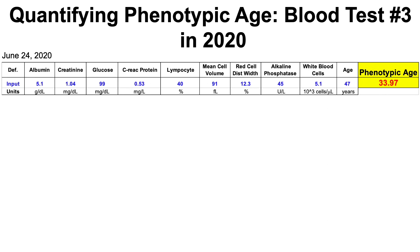Today I'm going to talk about quantifying phenotypic age, which I posted a video about earlier. Phenotypic age, also known as biological age, is a measure of disease risk and risk of death for all causes. A couple days ago I got the standard blood chemistry screen — also known as the CBC — and C-reactive protein measured, and that's basically all you need to calculate your biological age.